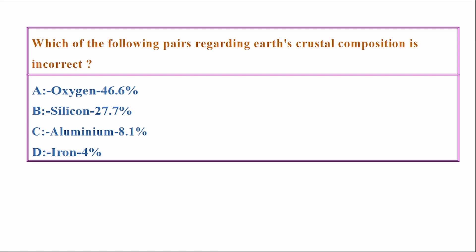Which of the following pairs regarding earth's crustal composition is incorrect? Options: oxygen 46.6%, silicon 27.7%, aluminium 8.1%, iron 4%.